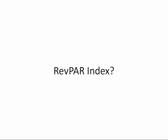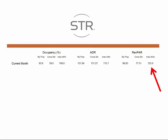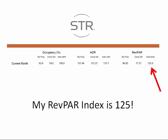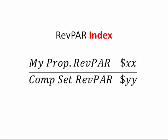Index, however, is not on your P&L, so you would have to go to the STAR report — an independently published report from the STAR corporation — which takes your RevPAR and divides it by your competitive set's RevPAR to give you an index. In this instance, you would say your RevPAR index is 125, or 125%. It's not a dollar figure — it simply takes your property's RevPAR and divides it by your competitive set's RevPAR.